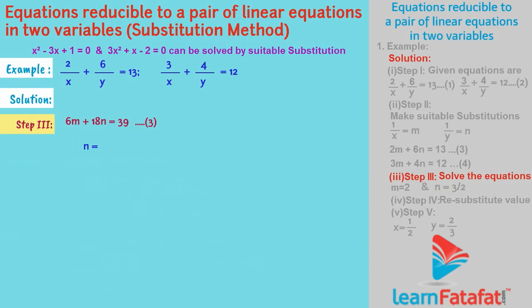Substituting n is equal to 3 upon 2 in equation 3 we get: 2m plus 6 into 3 upon 2 is equal to 13. 2m plus 9 is equal to 13. 2m is equal to 13 minus 9. 2m is equal to 4. Therefore, m is equal to 2.